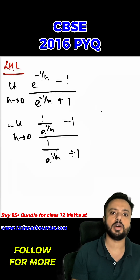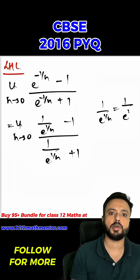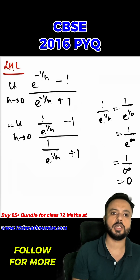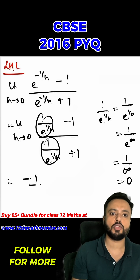Now I can substitute h equal to zero. One upon e raised to the power one by h gives one upon e raised to the power one upon zero, which is one upon e raised to the power infinity. Since e raised to the power infinity is infinity, and anything upon infinity is zero, both these terms come out to zero. Hence the LHL comes out to be minus one upon one, which is negative one.